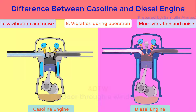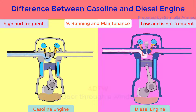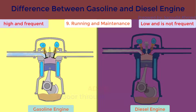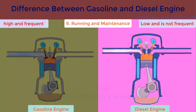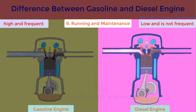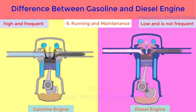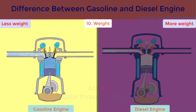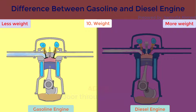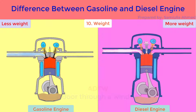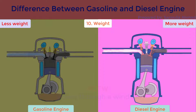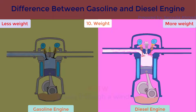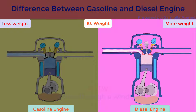Cost of running and maintenance. Gasoline engines have higher running cost and frequent maintenance is required. Diesel engines have lower running cost and frequent maintenance is not required. Weight: gasoline engines are lighter in construction because they require a lighter flywheel and comparably lower strength due to lower compression ratio. Diesel engines are heavier in construction because they require a heavier flywheel and comparably higher strength due to higher compression ratio.